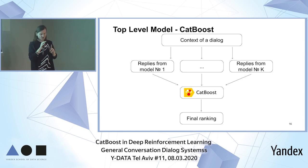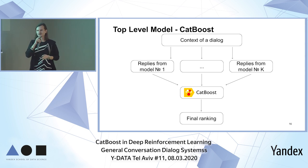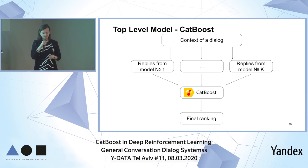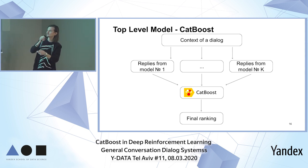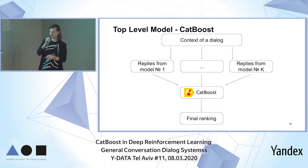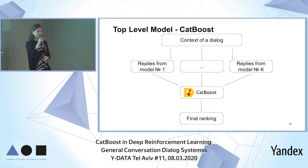Selective models are much easier to train, faster to apply, and you can limit them to good and grammatically correct responses — delete all the bad words and such. After you have all these models, you need a way to combine them and select the appropriate model at the appropriate time. The best way to do so was to use CatBoost. You get a context of a dialogue, collect candidate replies from all the models, do some feature engineering, throw the replies to CatBoost, and CatBoost produces a final ranking.